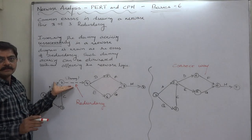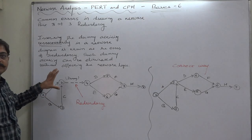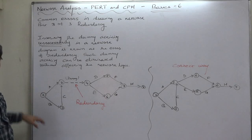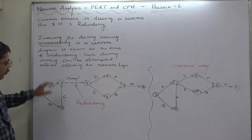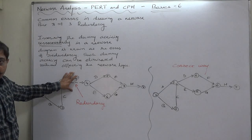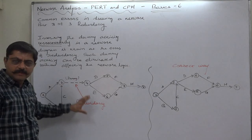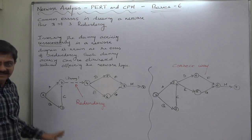So if we remove this dummy activity from this chart, that will not affect the logic of this network. Without affecting the final result of this network we can remove this dummy. That means this is a dummy activity inserted by the person unnecessarily.